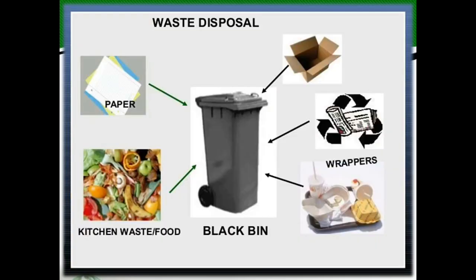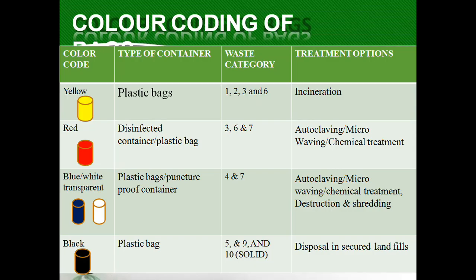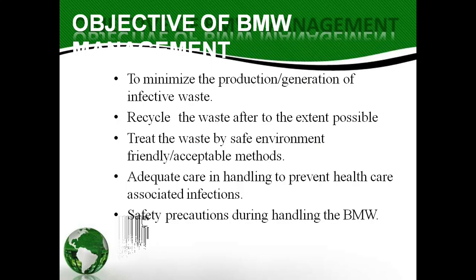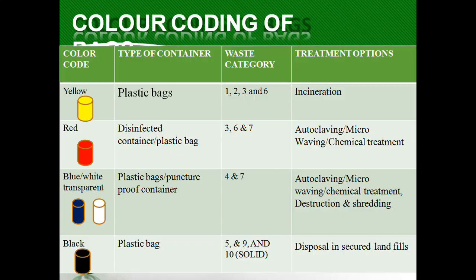The black bin collects general household-type items such as wrappers, kitchen waste, and paper. Other non-infectious waste produced from labs or hospitals is collected in the black bin. This waste can be handled easily as regular municipal solid waste.